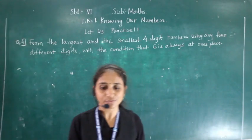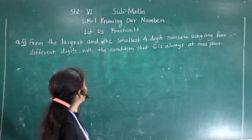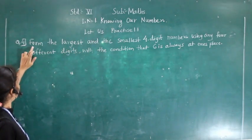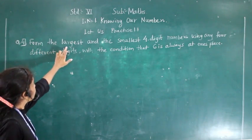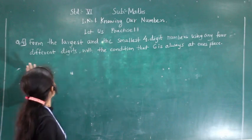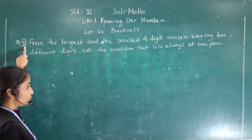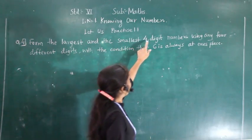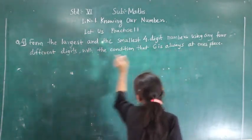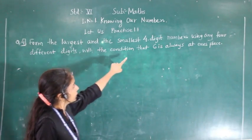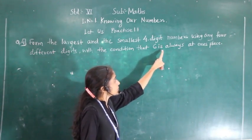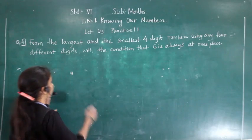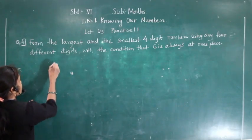Hello students, welcome to this video lecture. Today we are going to learn exercise 1.1, question number 4 — finding the largest and the smallest 4-digit numbers using any 4 different digits with the condition that 6 is always at the ones place.